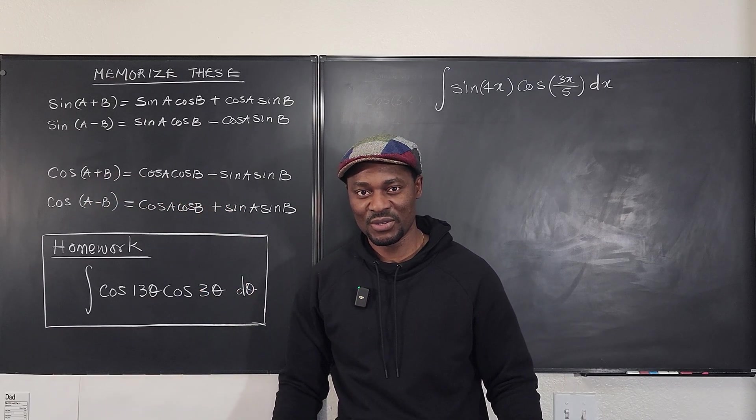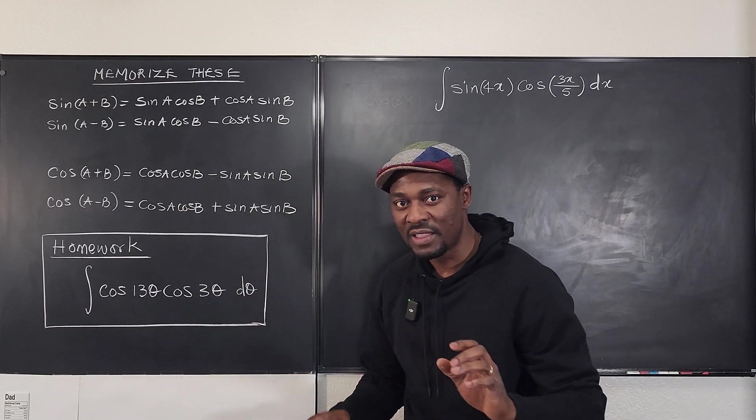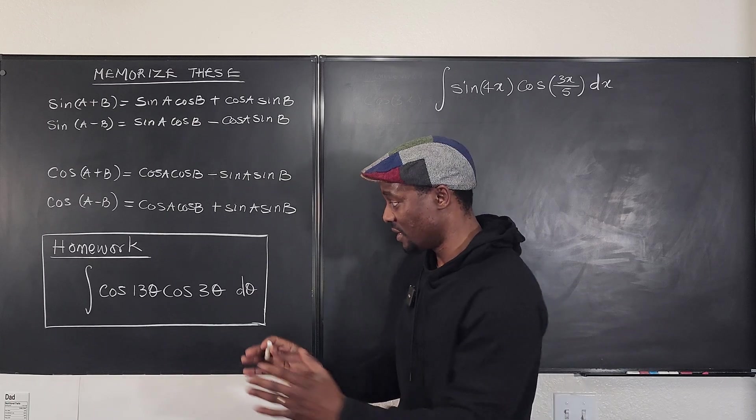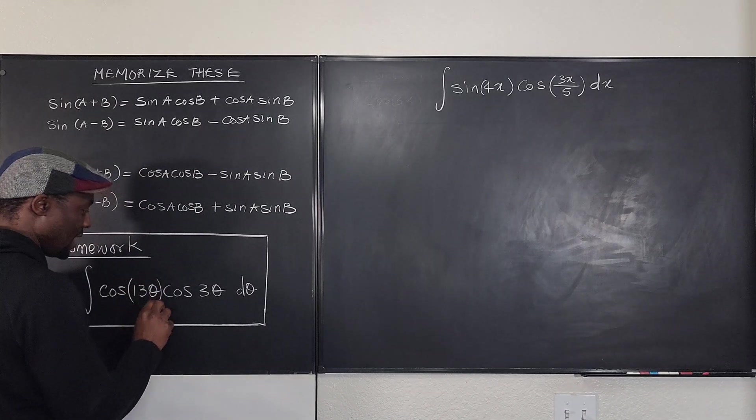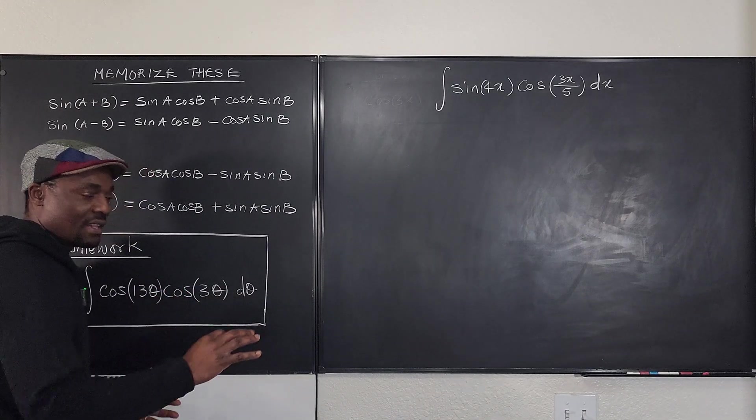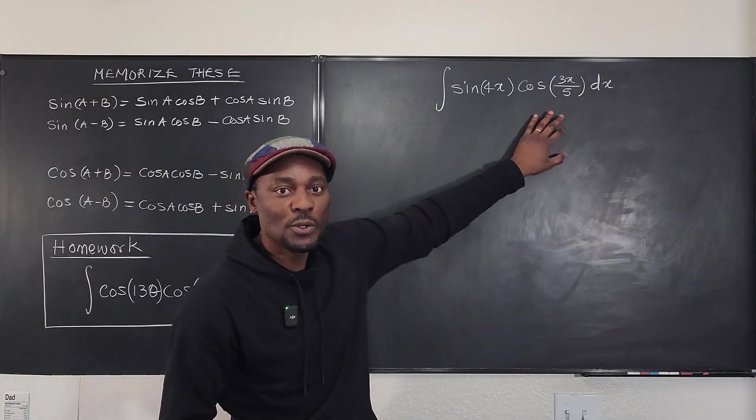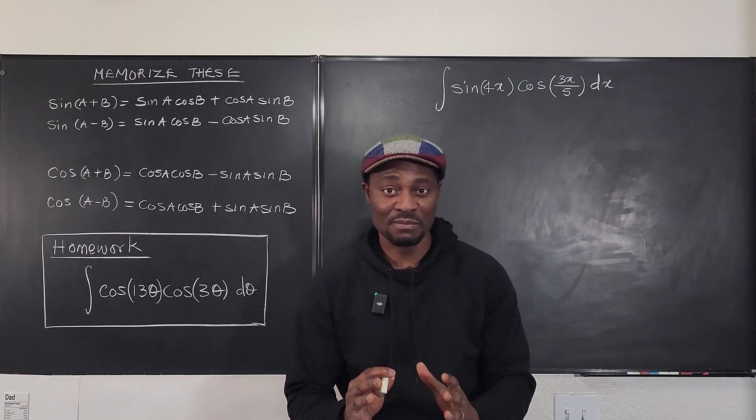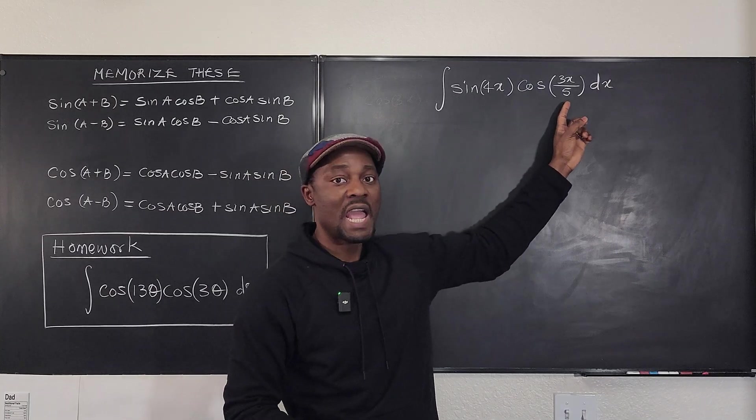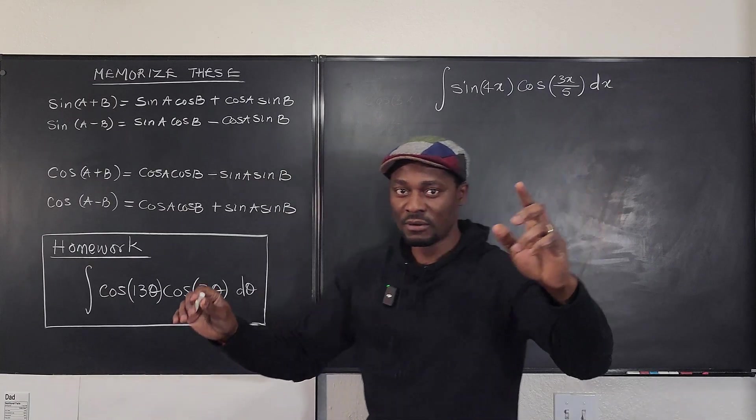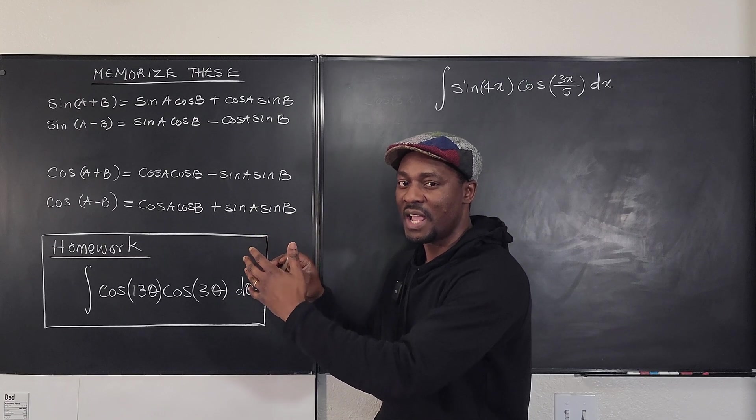So how do we use this to integrate the product of two functions that have different arguments? There is no identity you can use in this case because look here: this says 13θ, this says 3θ. This is too complicated. So what do I do? I ask myself which of these contains the product of sine and cosine, then I go to what I have already memorized and ask which one has the product of sine and cosine.